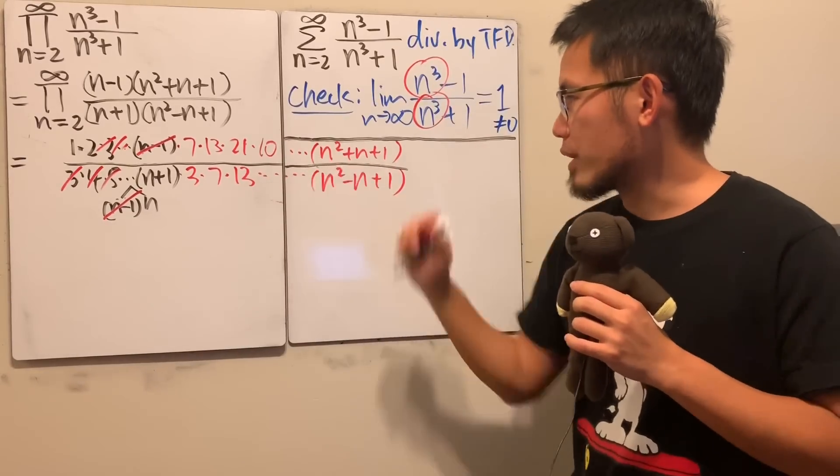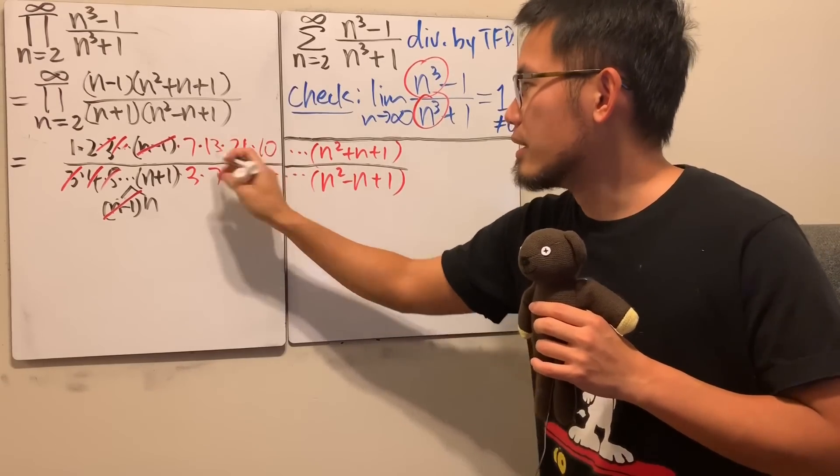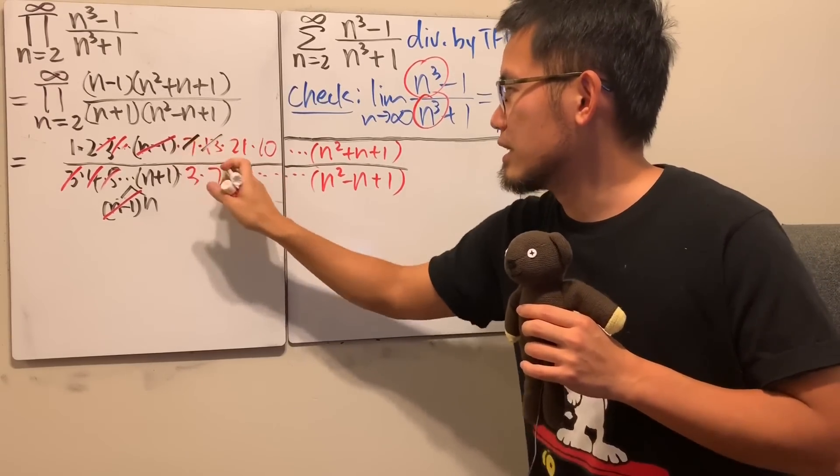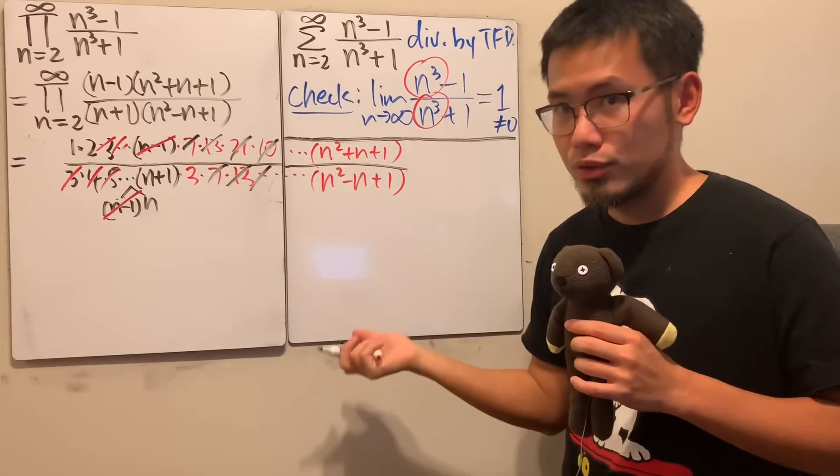All right, for the second part right here, the red numbers, we will have this 3 and this 13 and 13 cancel. Actually, the 7 and 7 cancel as well. And the truth is, this and that will cancel, this and that will cancel, and so on, so on, so on.